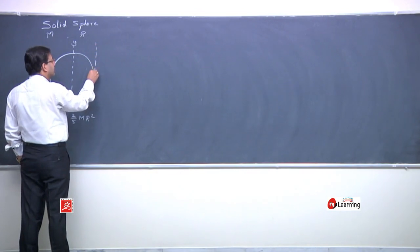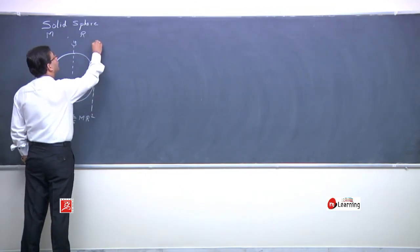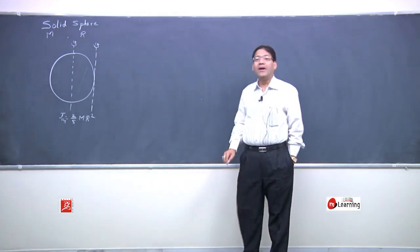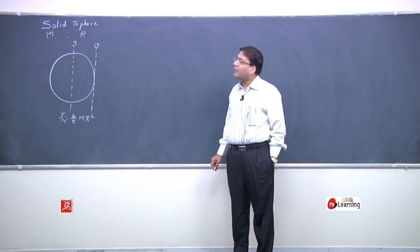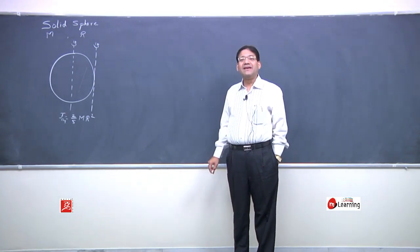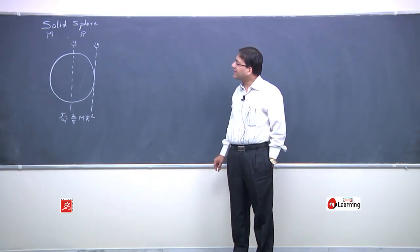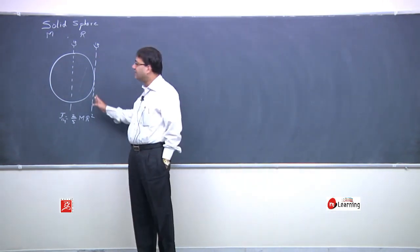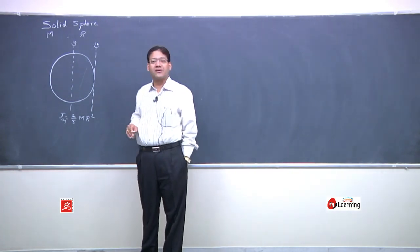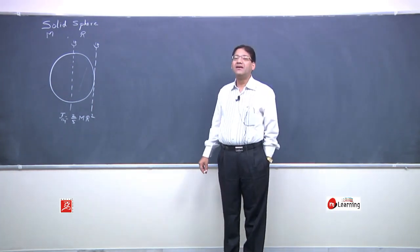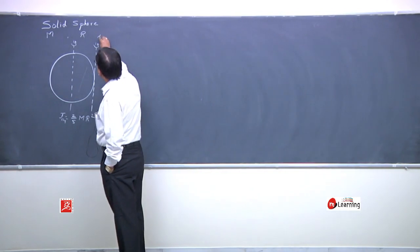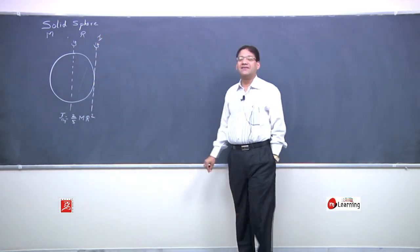With that knowledge, can you tell me what would be the moment of inertia of the sphere when it is rotated about any of its tangential axes? If we rotate the sphere about a tangent, and we imagine an axis along this tangent, what would be the moment of inertia? Here we find a simple application of the parallel axis theorem.